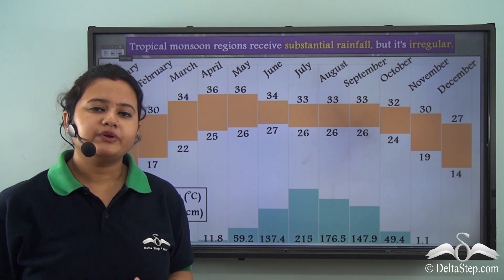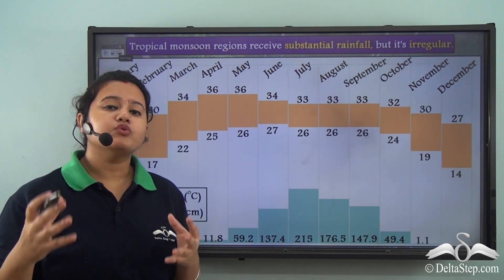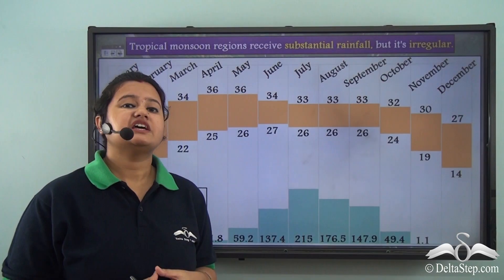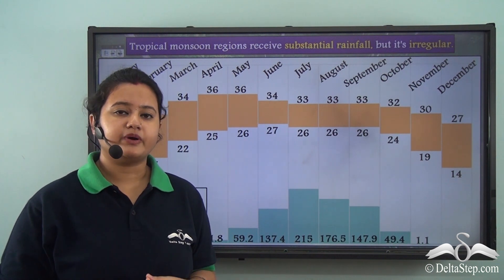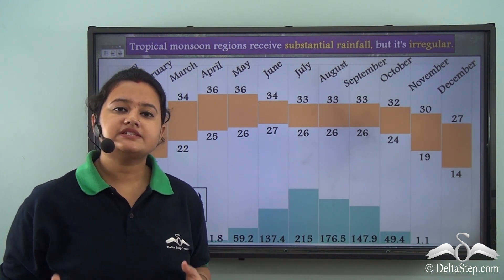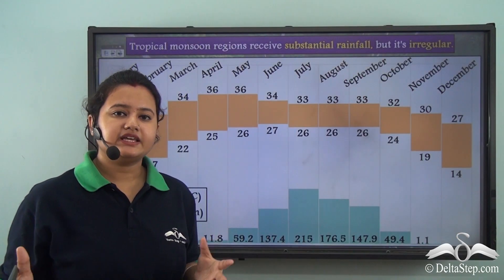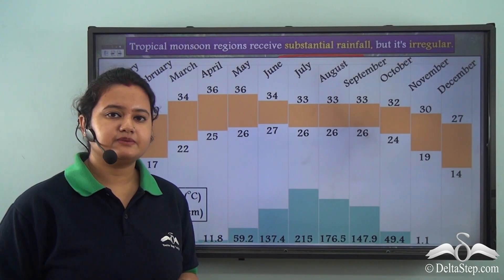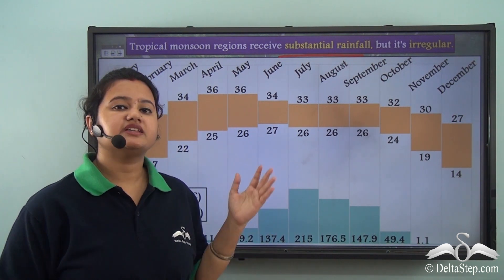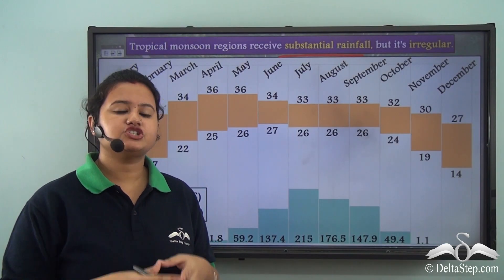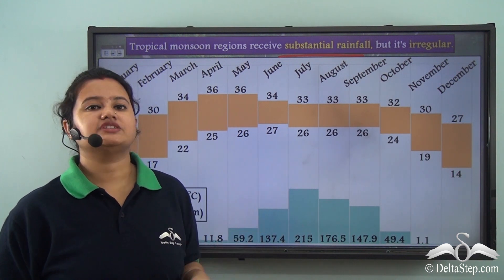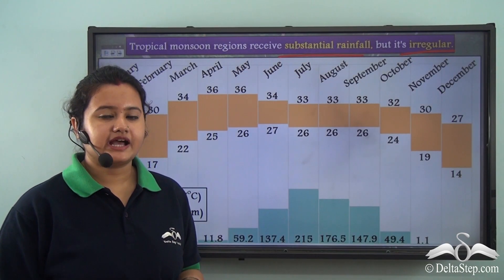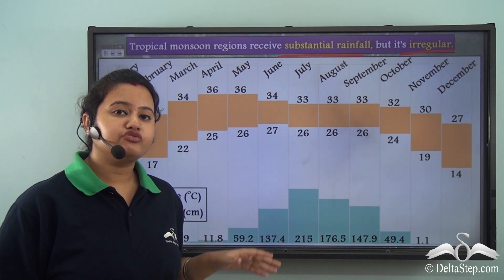Tropical monsoon regions receive most of their rain during summer from southwest monsoon winds, while during winter some rain is caused by northeast monsoon winds and western disturbances. Overall, tropical monsoon regions receive substantial rainfall, but the amount of precipitation varies throughout the year as seen in this chart. The rate of precipitation is irregular in nature — meaning it is not uniform throughout the year.